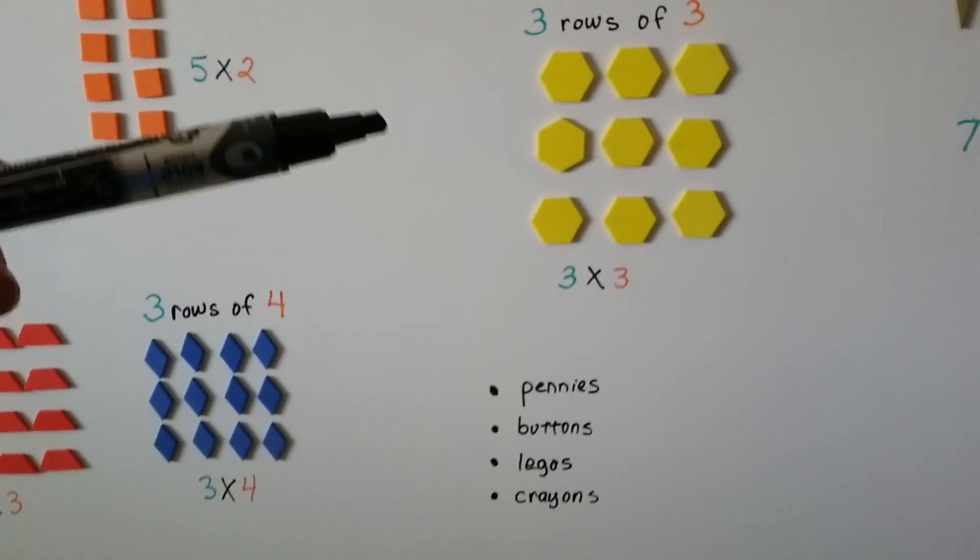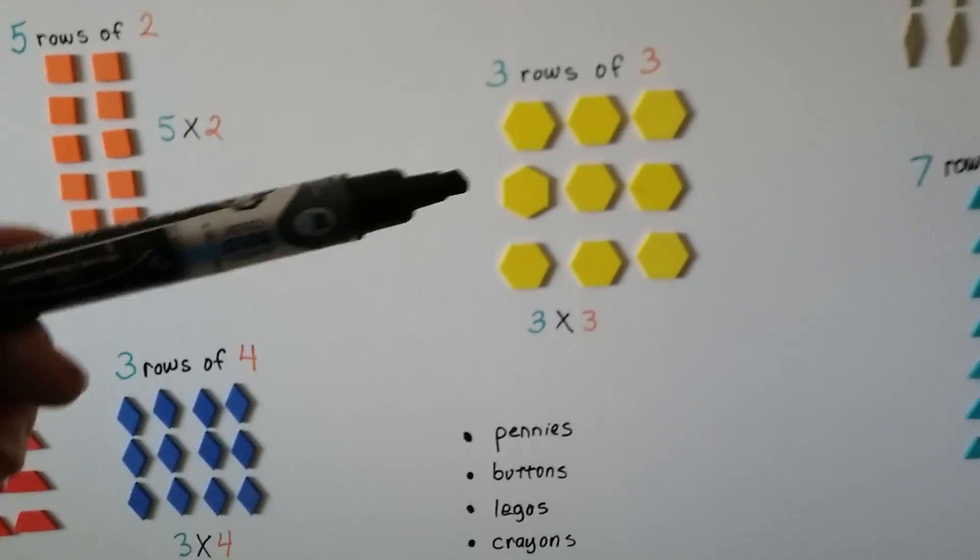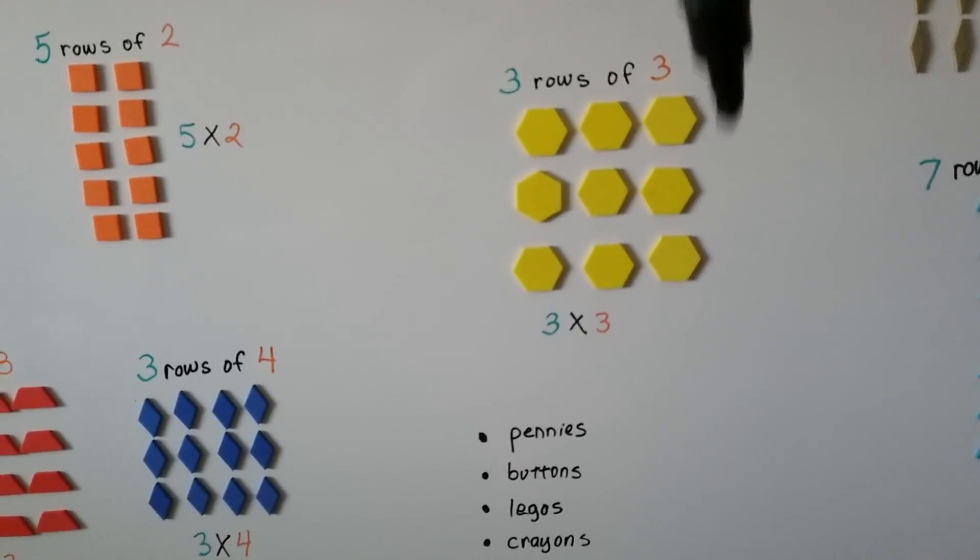Just remember, the first number is how many rows you have and the second number is how many columns you have.